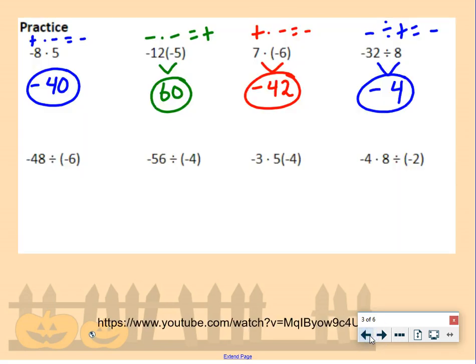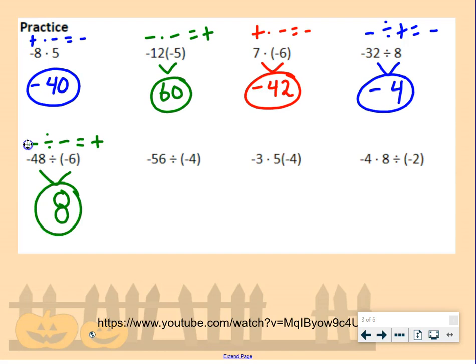Negative 48 divided by negative 6: a negative divided by a negative — same sign — gives us a positive answer. 48 divided by 6 is 8, so the answer is positive 8. Negative 56 divided by negative 4: negative divided by negative gives us a positive answer, and 56 divided by 4 is 14.